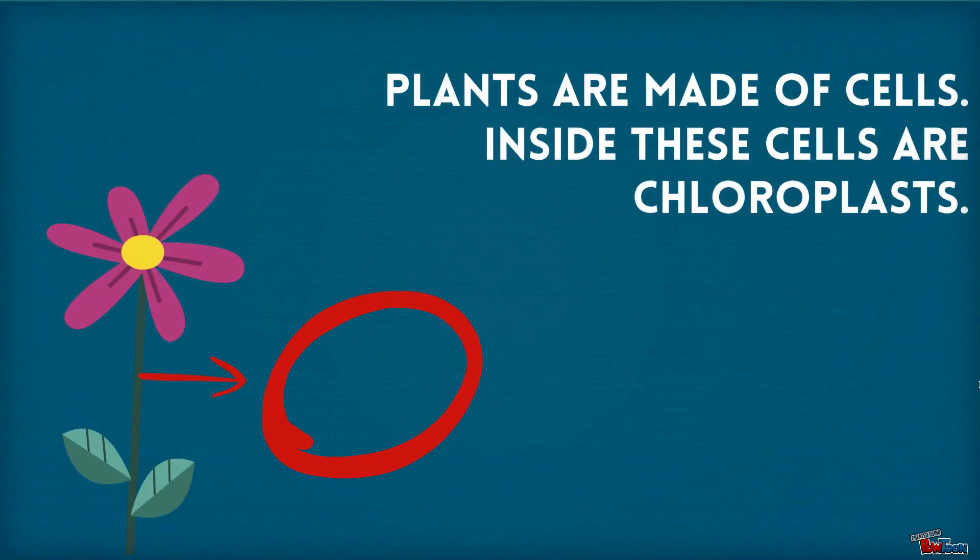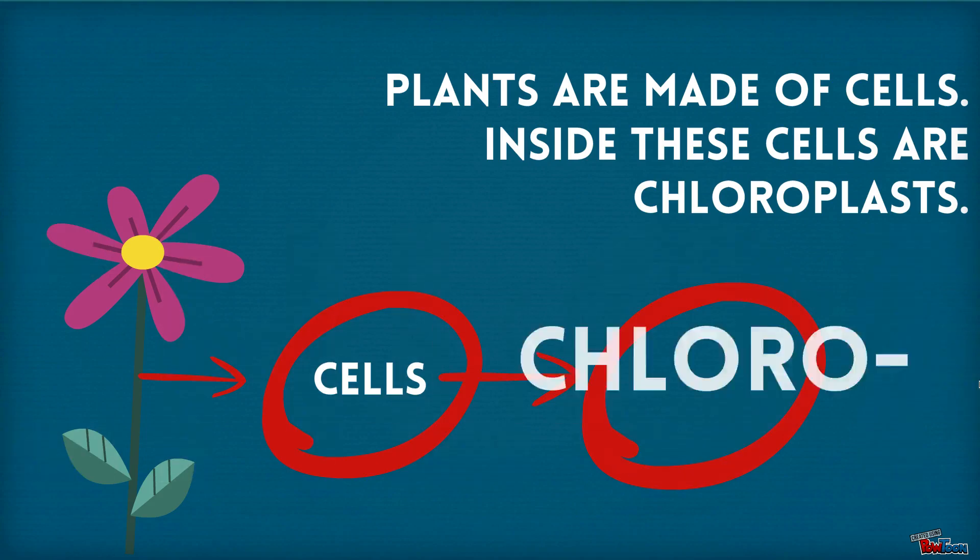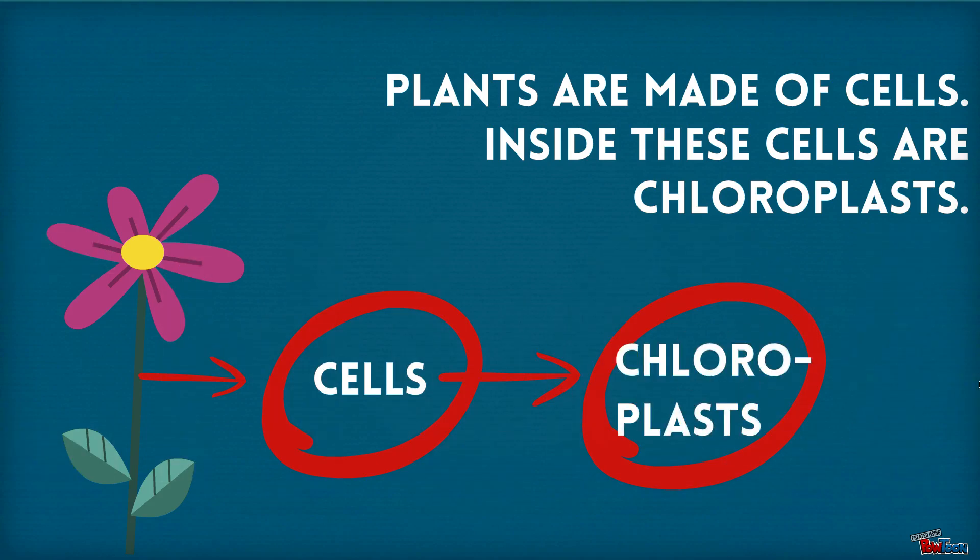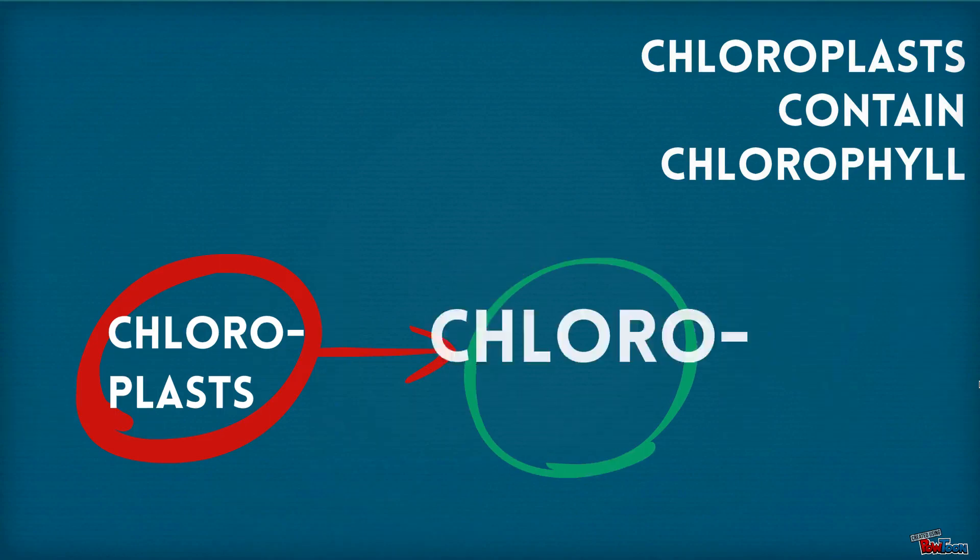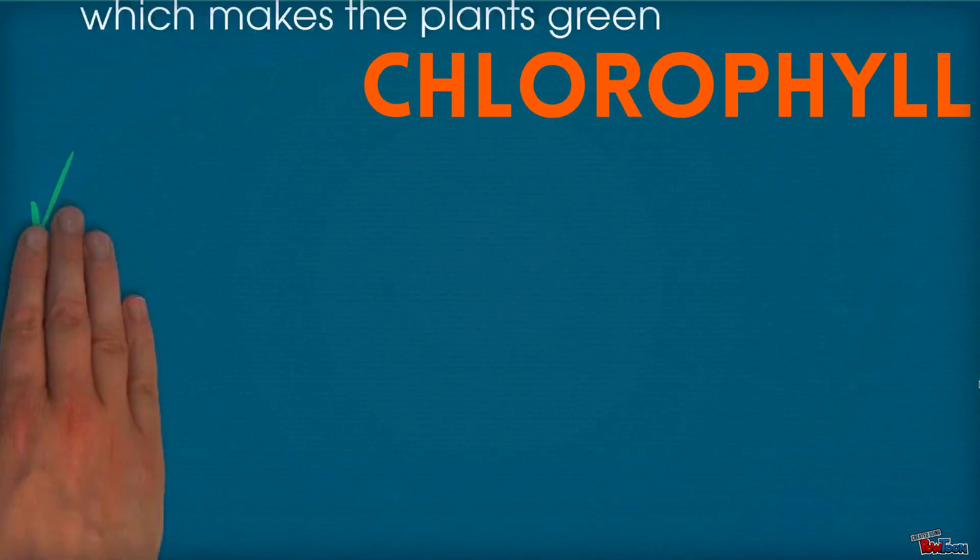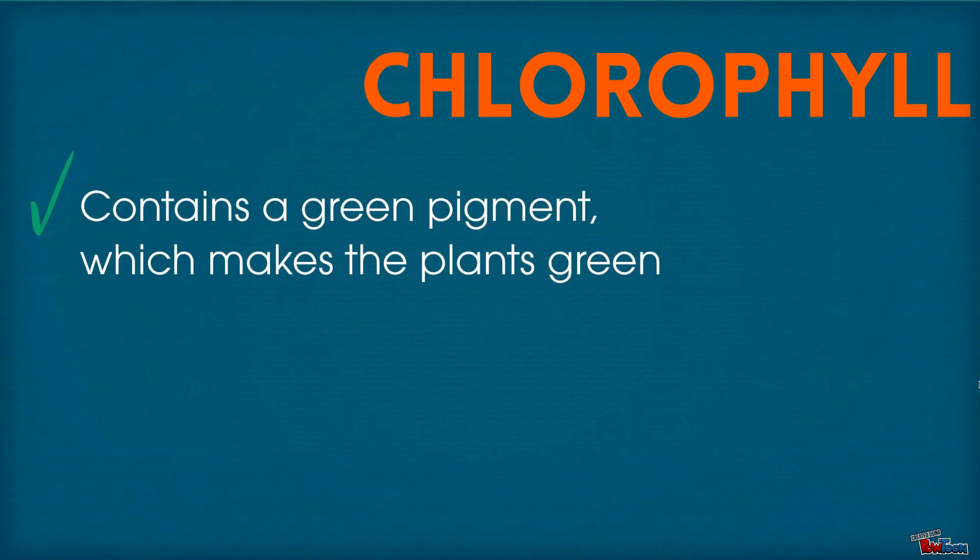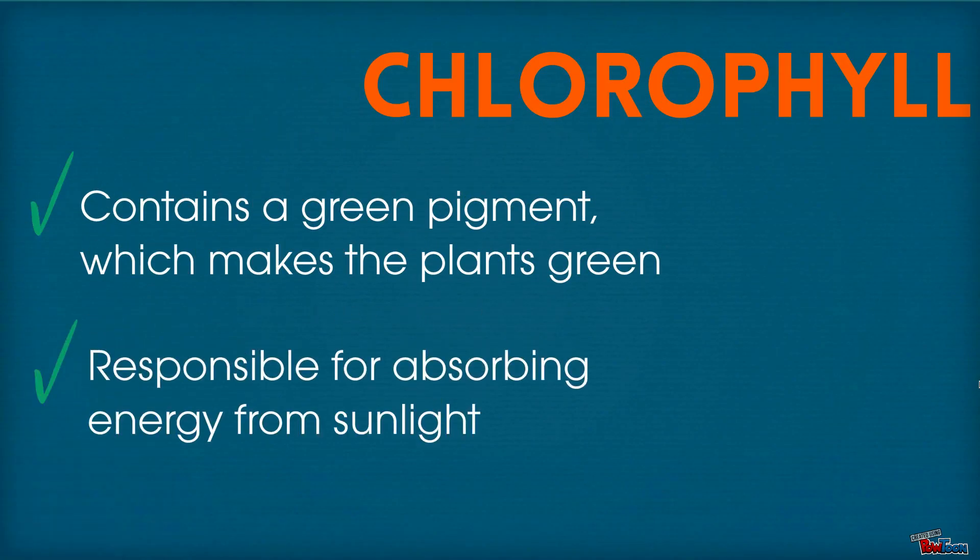Plants are made of cells and inside these cells are chloroplasts. Chloroplasts contain chlorophyll. Chlorophyll contains a green pigment which makes the plants green and is responsible for absorbing energy from sunlight.